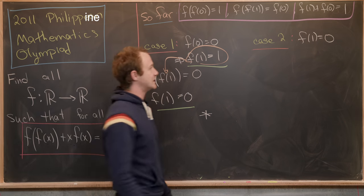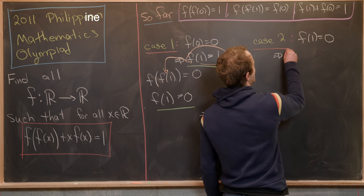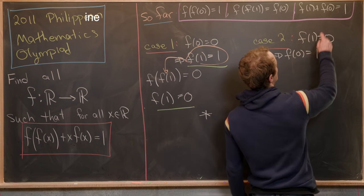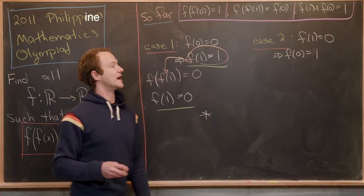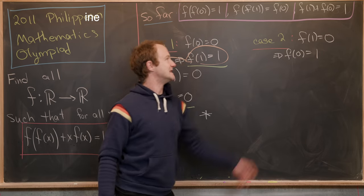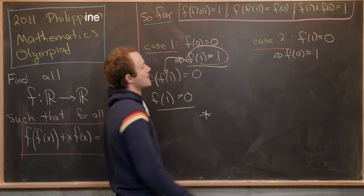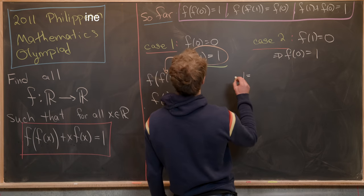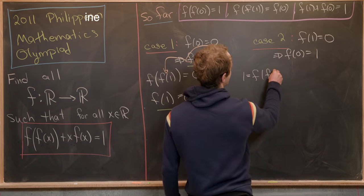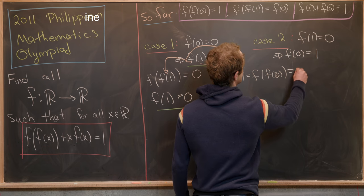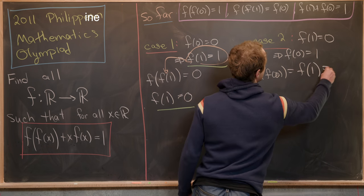So again, if f(1) = 0, that tells us that f(0) = 1 by this equation right here. But now, combining these two equations with this one right here, we'll see that something goes wrong. So notice that we'll have 1 = f(f(0)) = f(1) = 0.